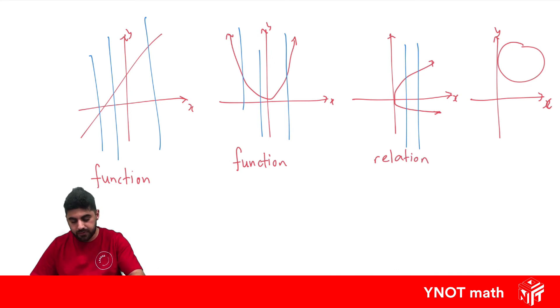And our circle, same thing. The vertical line can cut it more than once. So this is also a relation.